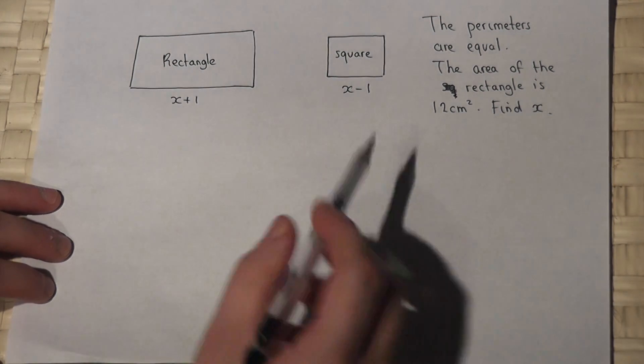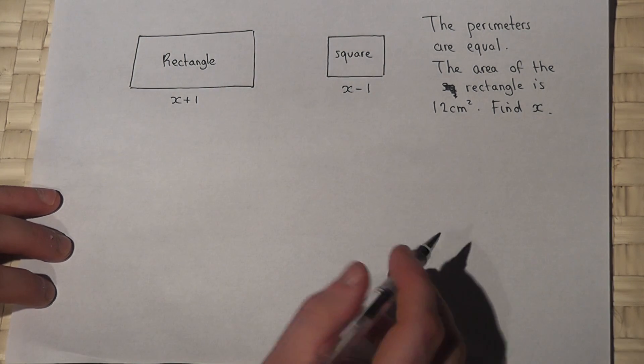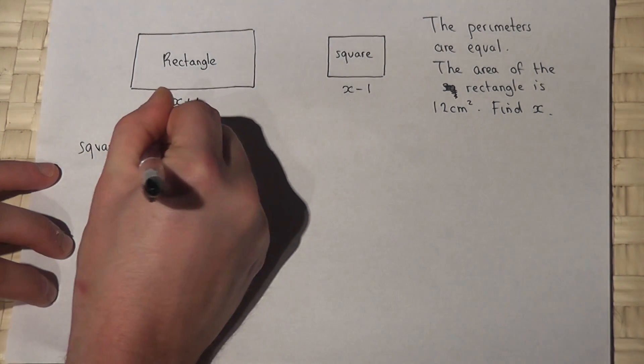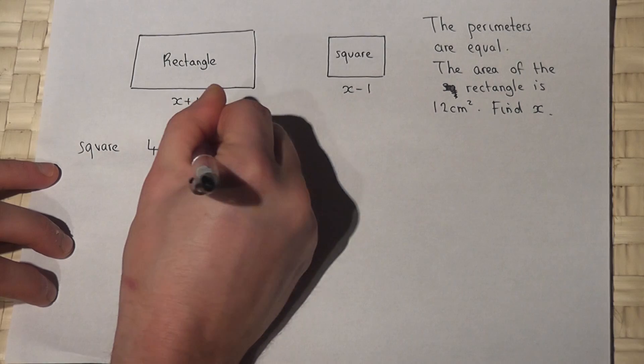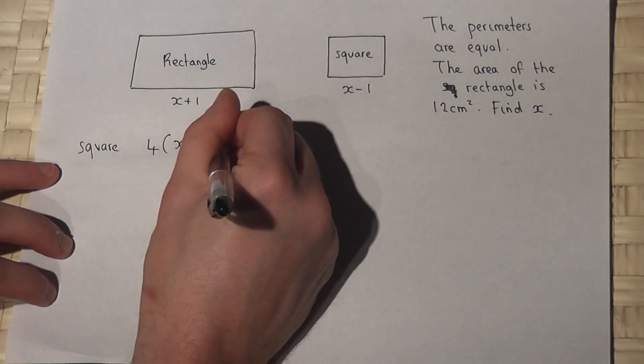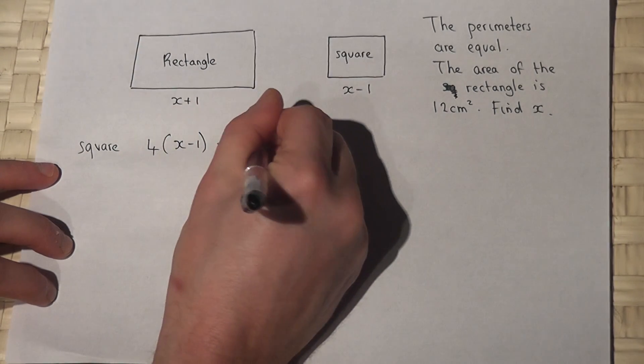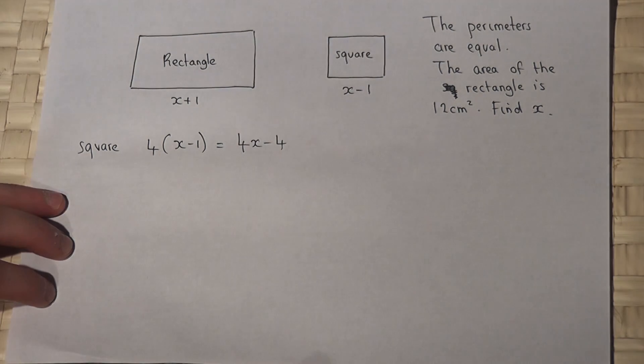Now for a square we know that its perimeter must be four lots of four sides x minus 1, which just equals 4x minus 4.